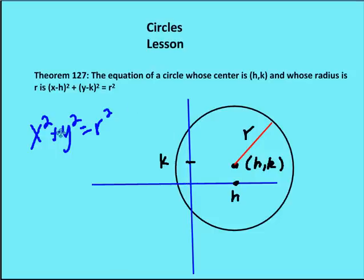The equation for a circle with its center at the origin is simply x squared plus y squared equals the radius squared. For a translated circle, where the center is not at the origin, the equation is x minus h squared plus y minus k squared equals r squared, where h and k are the coordinates of the center.